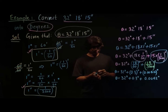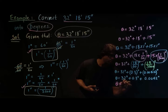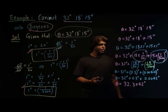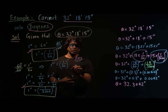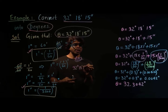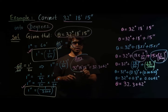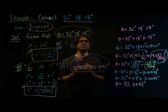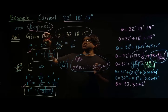If I add all these numbers, I get theta is equal to 32.3042 degrees. So my answer is that this angle, which is 32 degrees 18 minutes and 15 seconds, is equal to 32.3042 degrees. This is the conversion for an angle from degrees minutes and seconds to degrees, and this is how we solve any question that asks us to convert from degrees minutes and seconds to degrees.